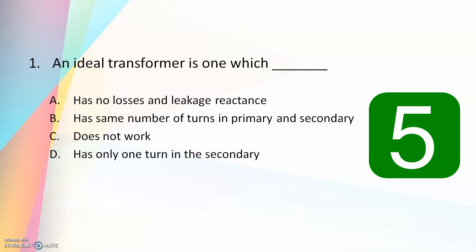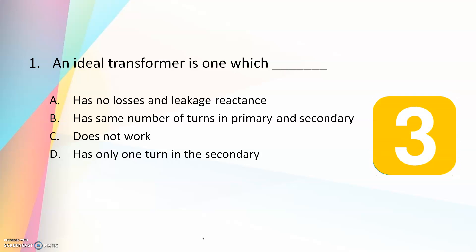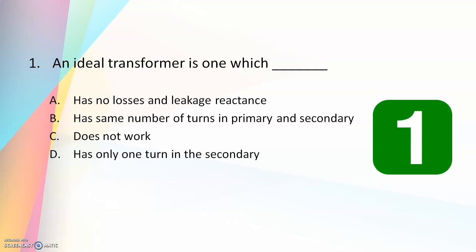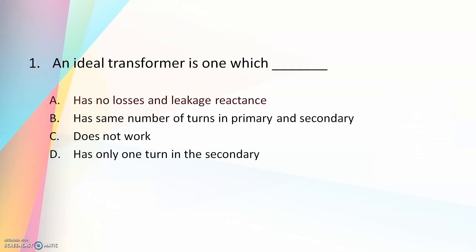Now let us start with the first question. An ideal transformer is one which: has no losses and leakage reactance; has the same number of turns in primary and secondary; or does not work on one turn in the secondary. The answer is: an ideal transformer is one which has no losses and leakage reactance. It has the highest efficiency — it is only ideal and not practically real.